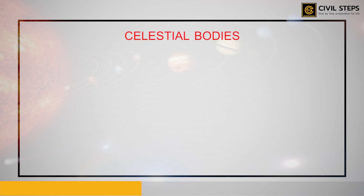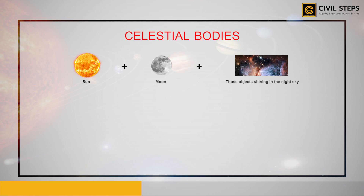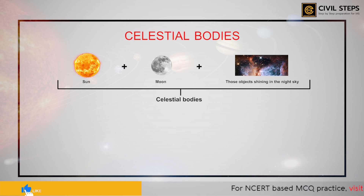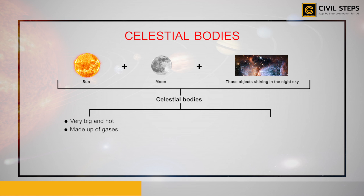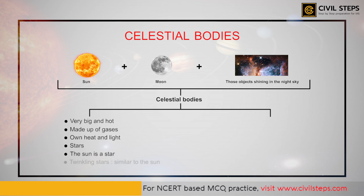The very first thing we are going to discuss is celestial bodies. The Sun, the Moon, and all those objects which are shining in the night sky are called celestial bodies. Some celestial bodies are very big and hot because they are made up of gases — a combination of different gases. They have their own heat and light, which they emit in large amounts. These celestial bodies are called stars.